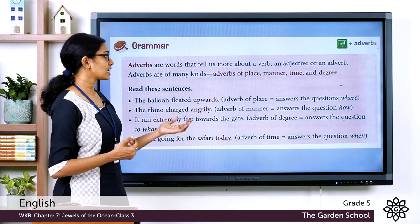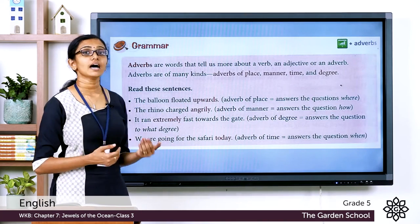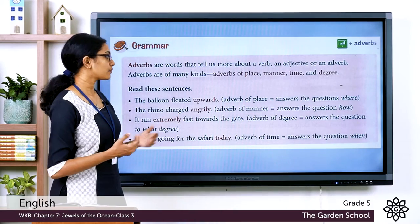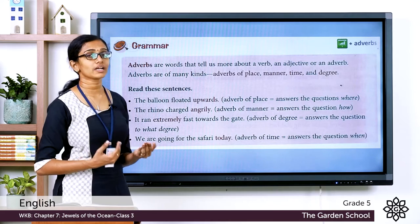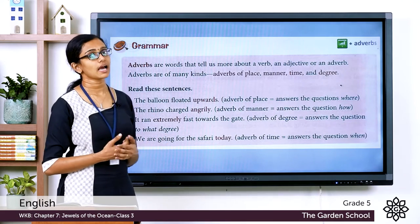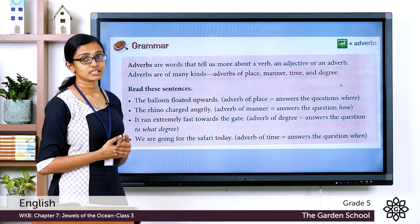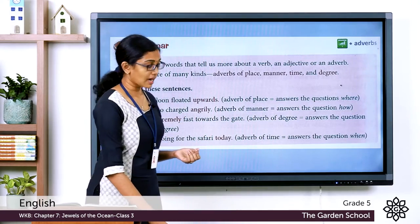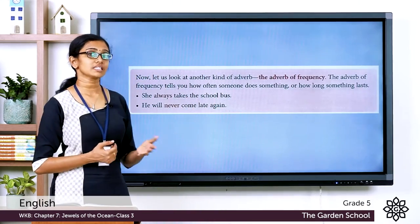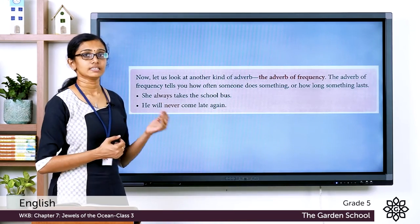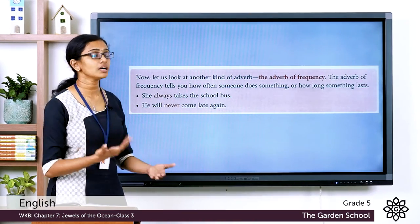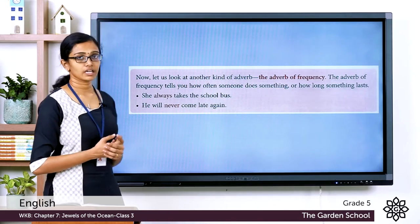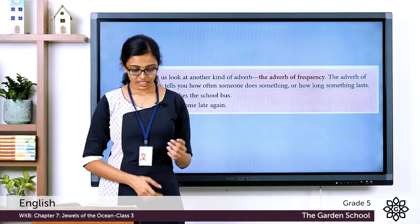Adverbs of time tell us the time at which the action is happening, so they answer the question 'when'. Adverbs of degree tell us to what degree or to what extent the action is happening. Adverbs of frequency tell us how often someone does something or how long something lasts. We have already learned all these in our English reader.